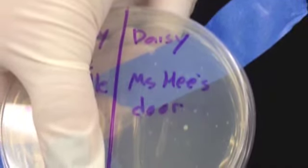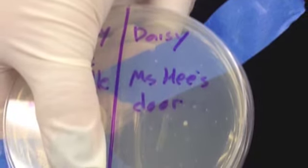In day three, my bacteria has a circular shape. It's colored cream, and it has an entire margin, and its size is small.